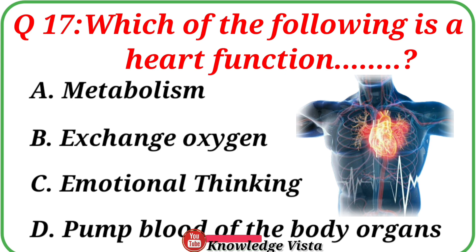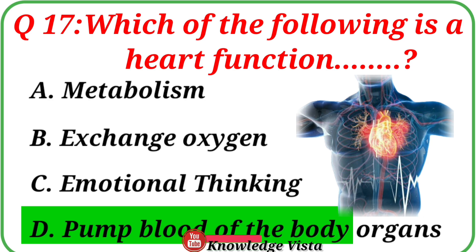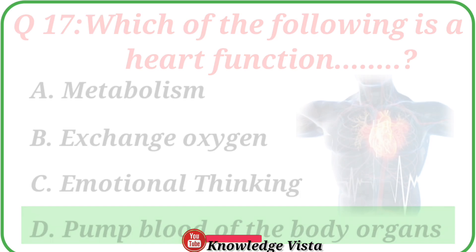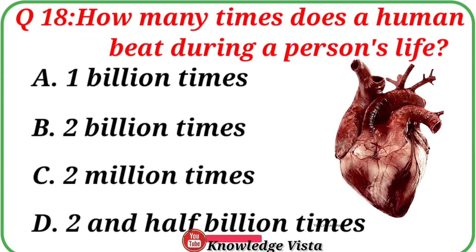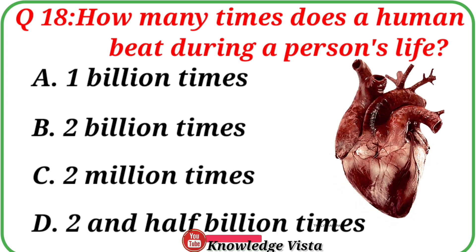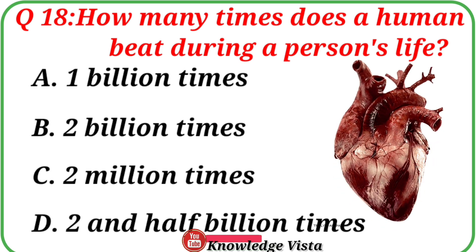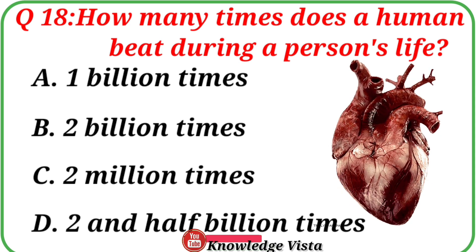Question No. 17. Which of the following is a heart function? Your options are: A. Metabolism, B. Exchange oxygen, C. Emotional thinking, D. Pump blood of the body organs. Correct answer is option D: Pump blood of the body organs.